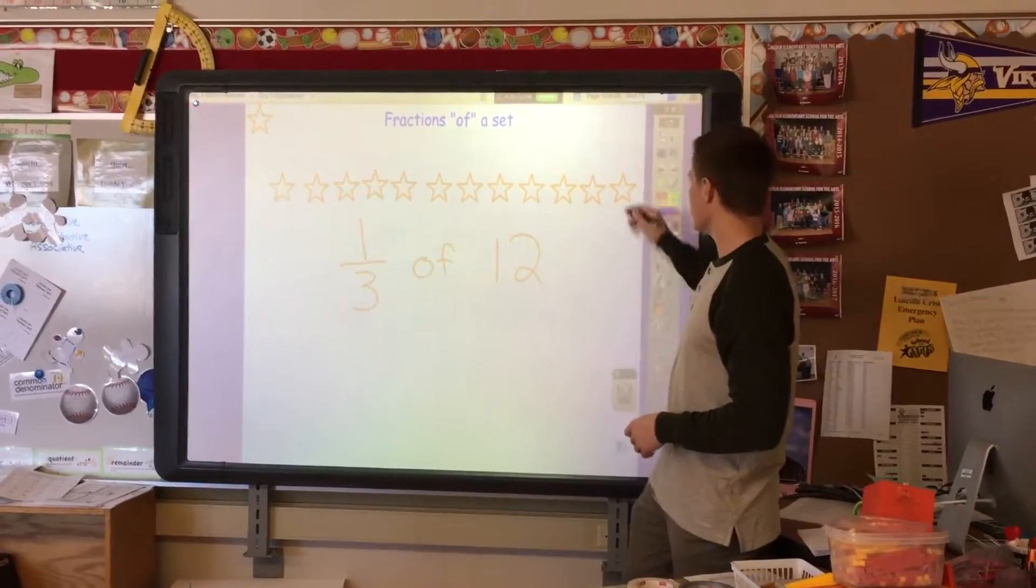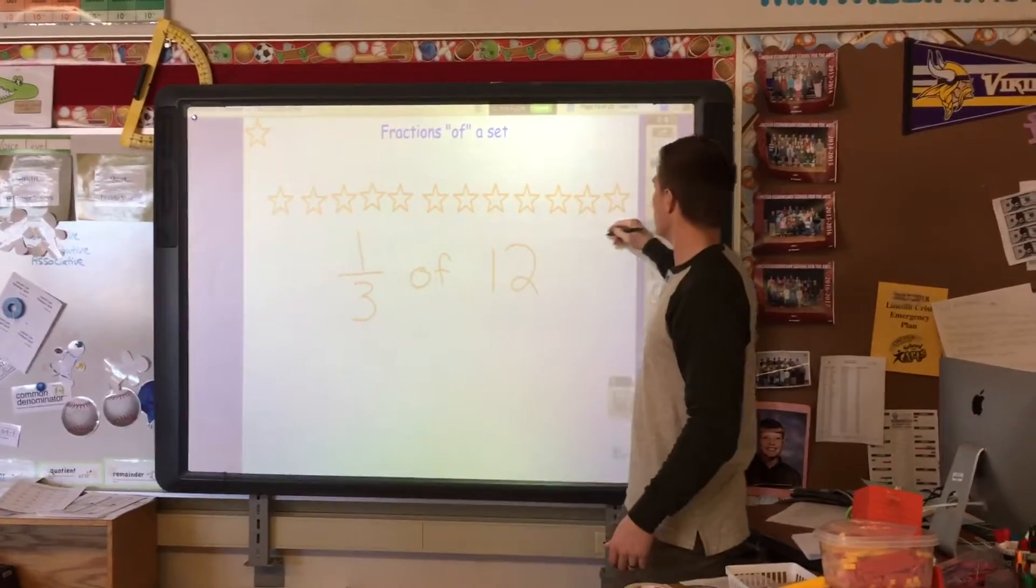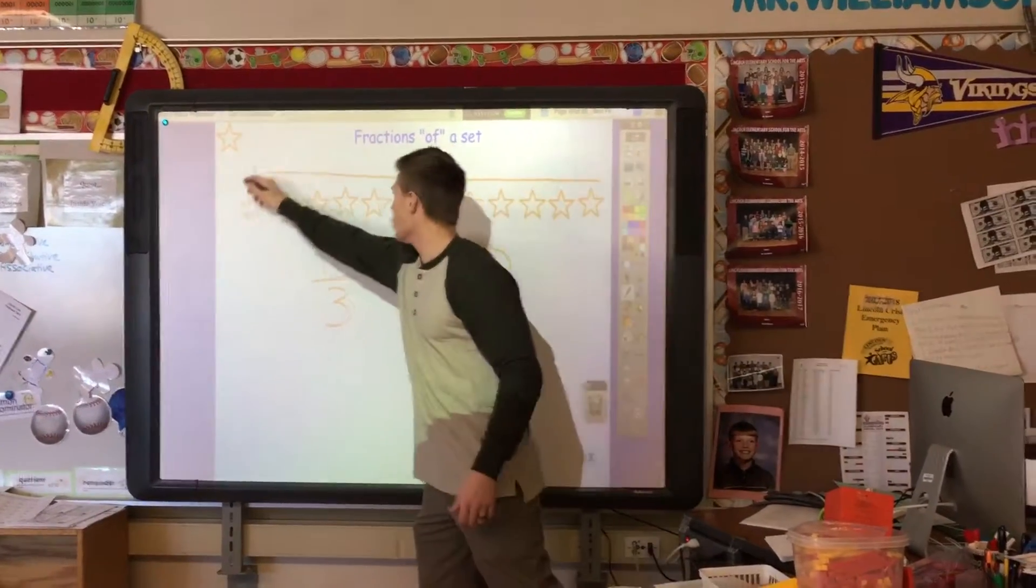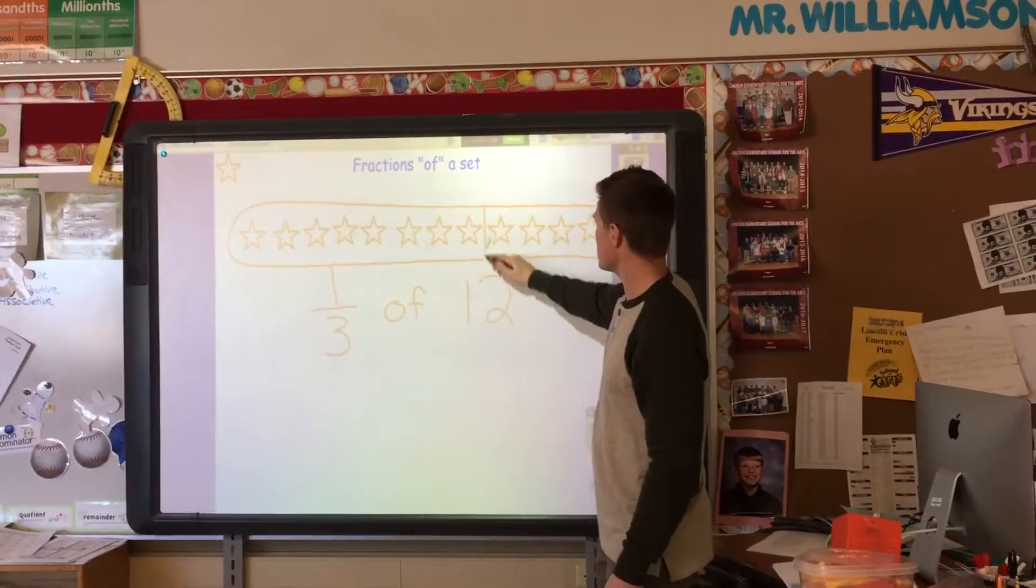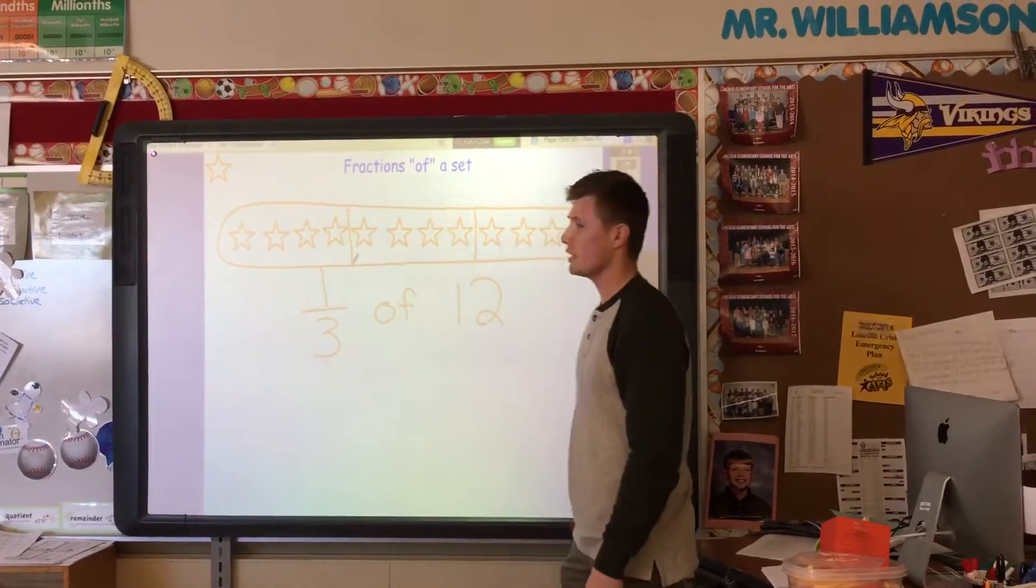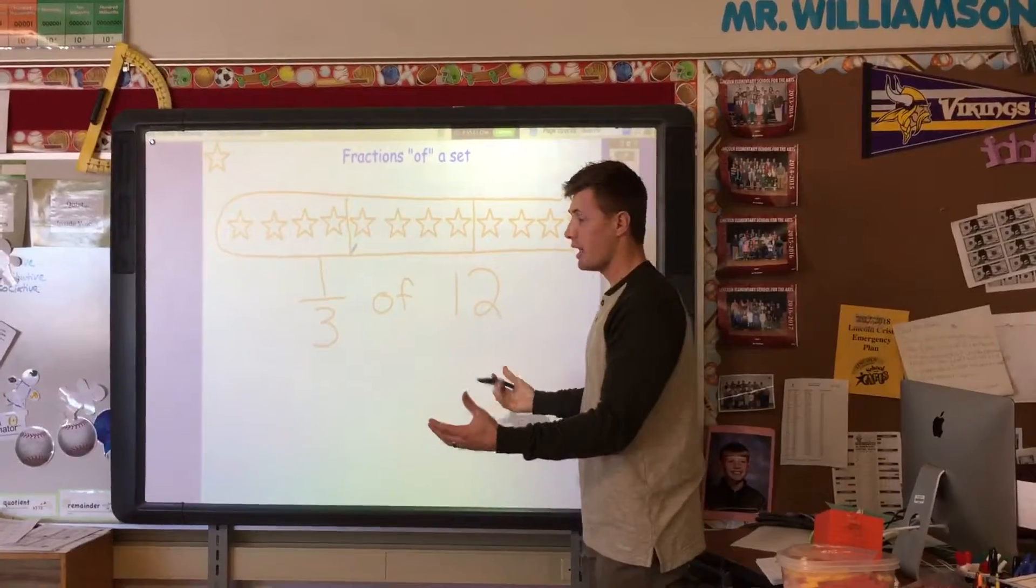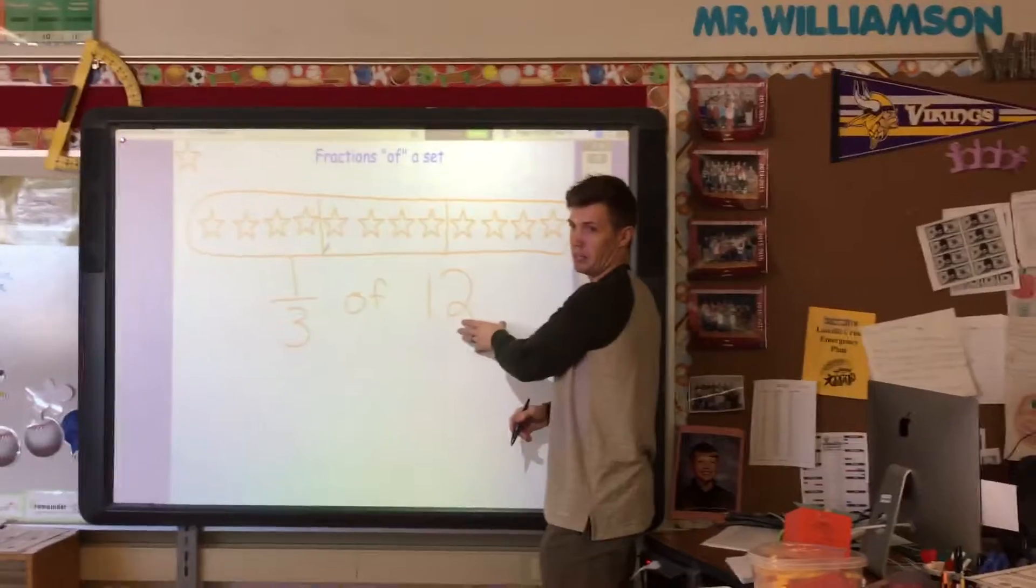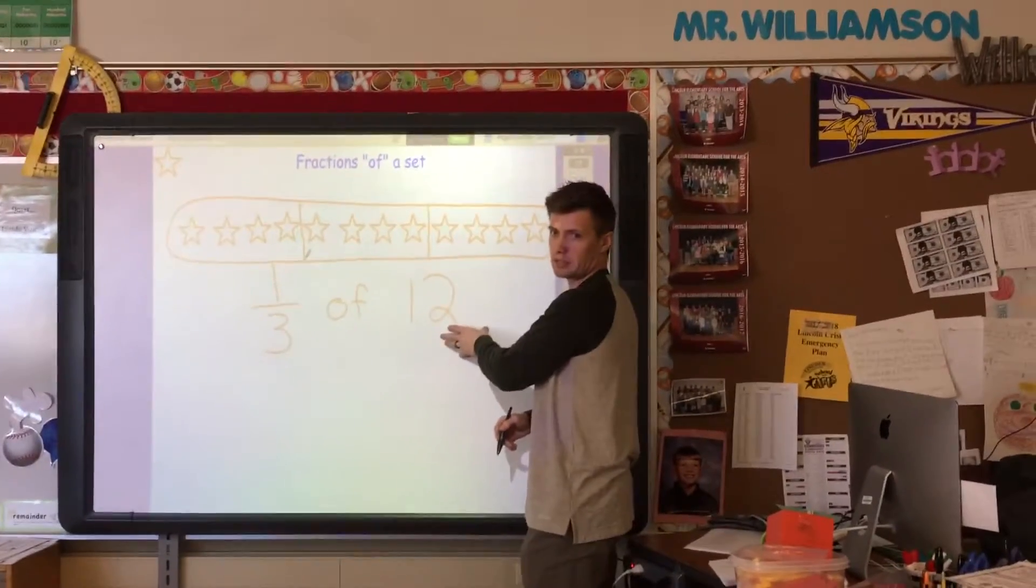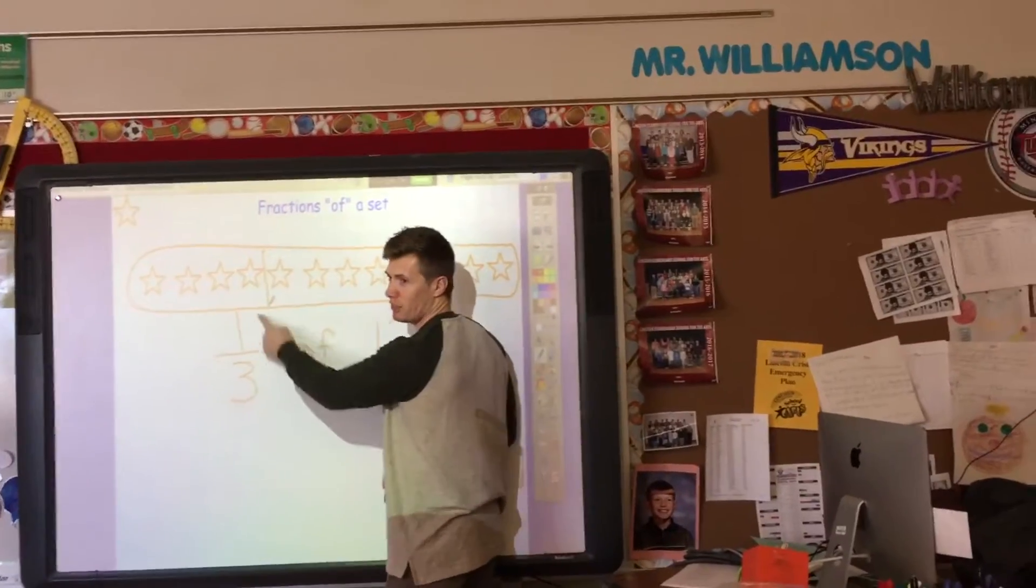So understanding this, I should be able to see where if this was one whole, I could still keep it and cut it into thirds and have one, two, three-thirds. That's what three-thirds of 12 would be, all of them. But I don't have three-thirds. I only have a fraction of this.